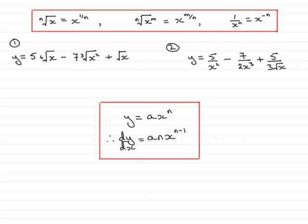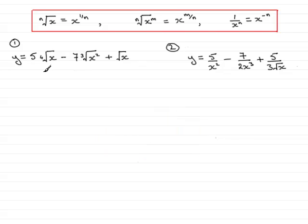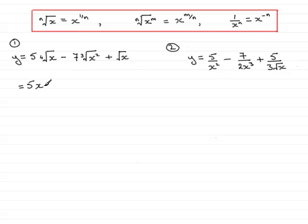So, let's get cracking and see how this works for these examples. Now, in the first one, what I've got to do is change the fourth root of x. And I can do that through this rule here. You'll see that n is 4, so I can write this part here as x to the power 1 quarter. Therefore, we have the first term becomes 5 times x to the power 1 quarter.